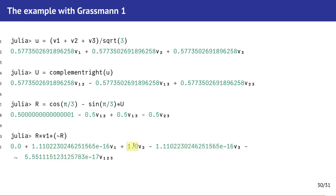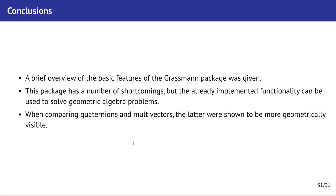In conclusion, we give a brief overview of the basic features of Grassmann package. The package has a number of bugs but even at this stage it has well-done functionality and great capabilities to solve some geometric algebra problems. Also we give a comparison of quaternions and multivectors and we show some features of multivectors which make them better for rotation in 3D space.